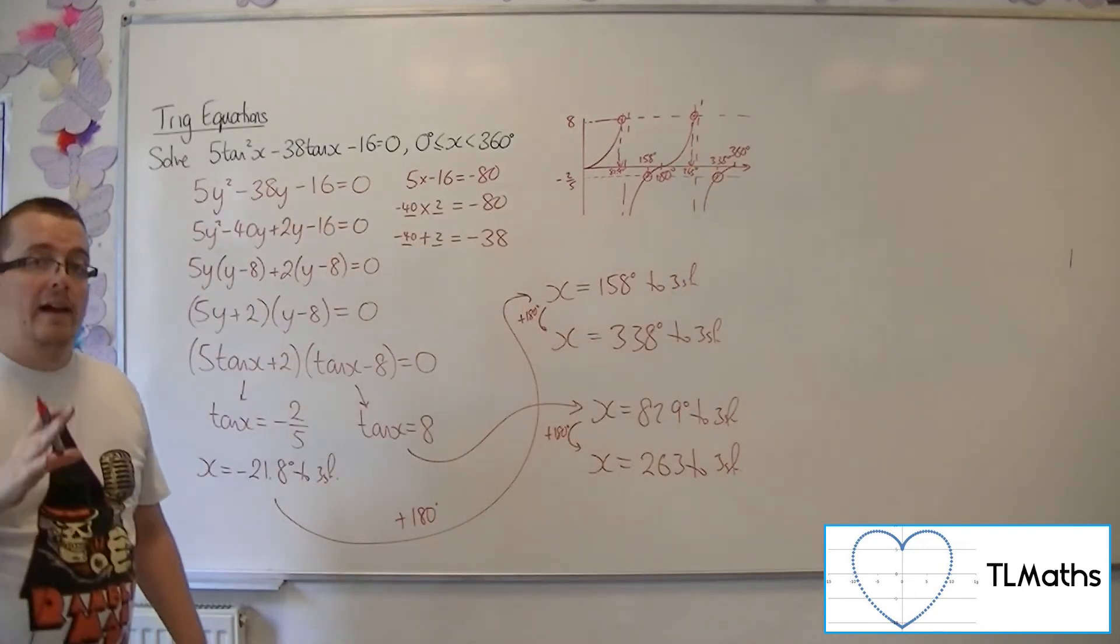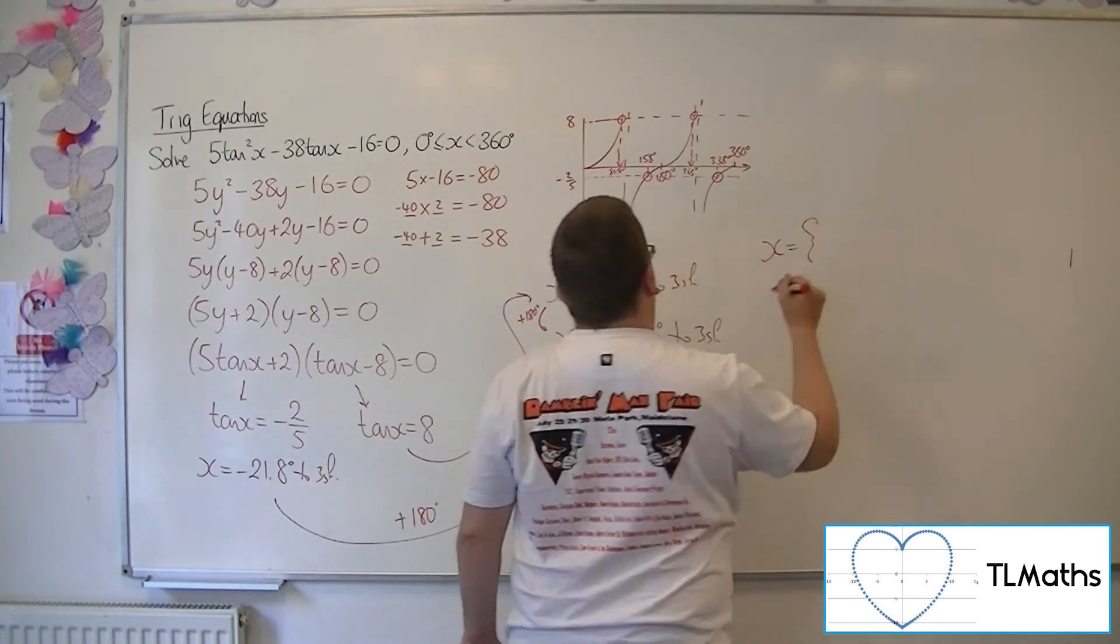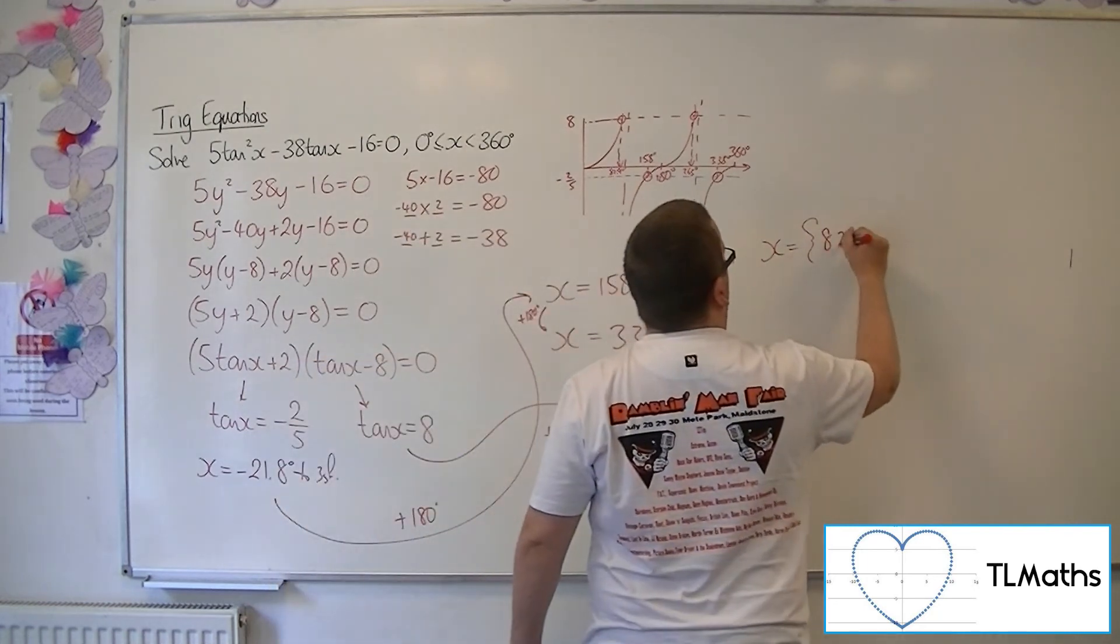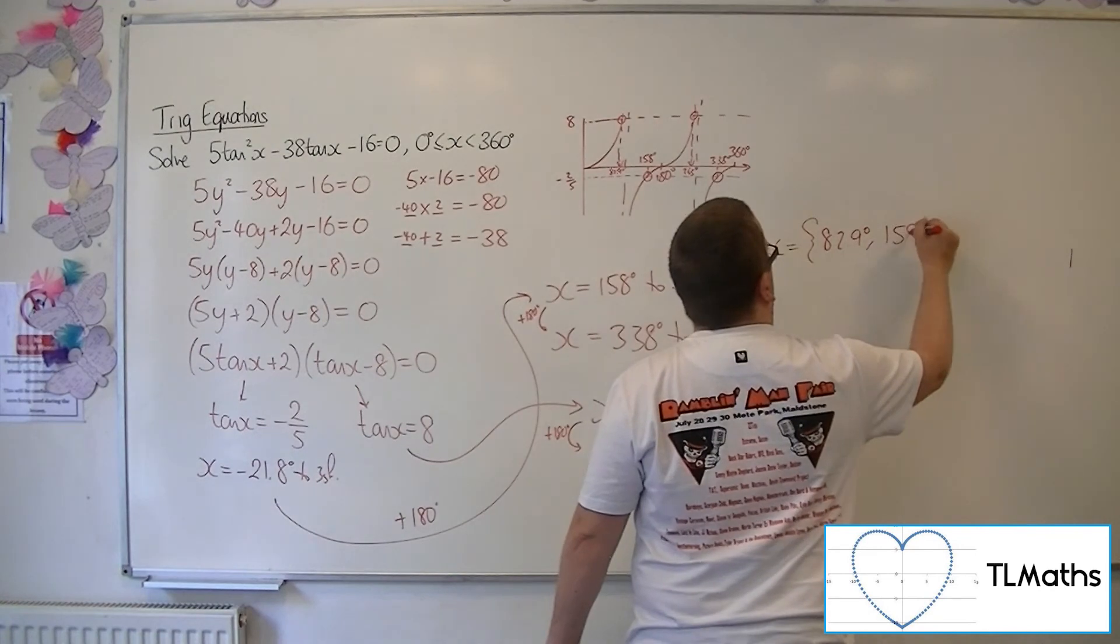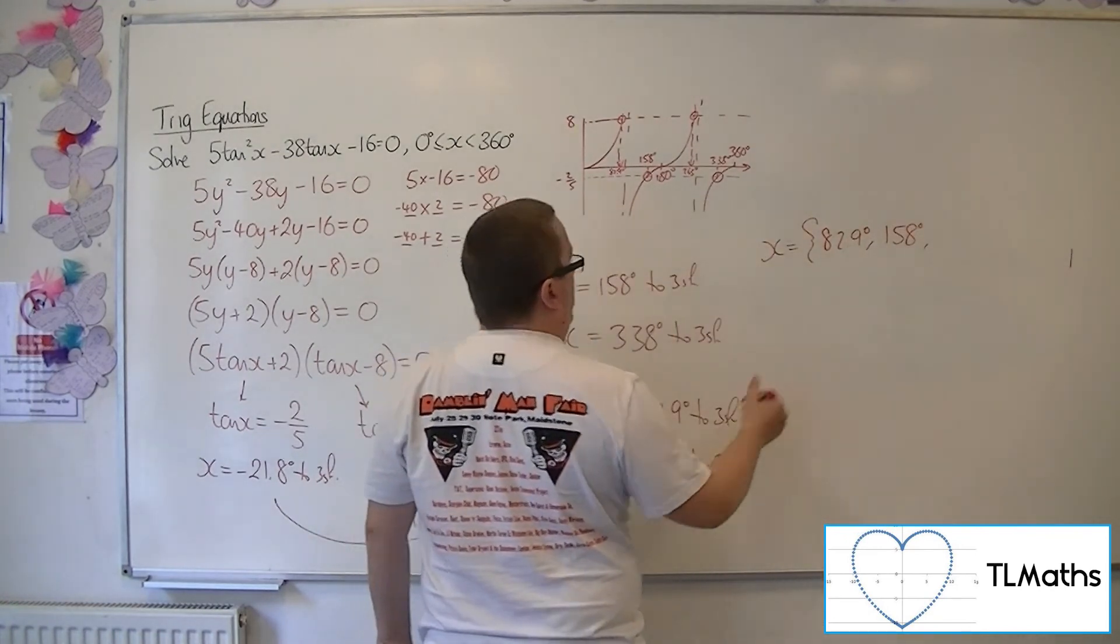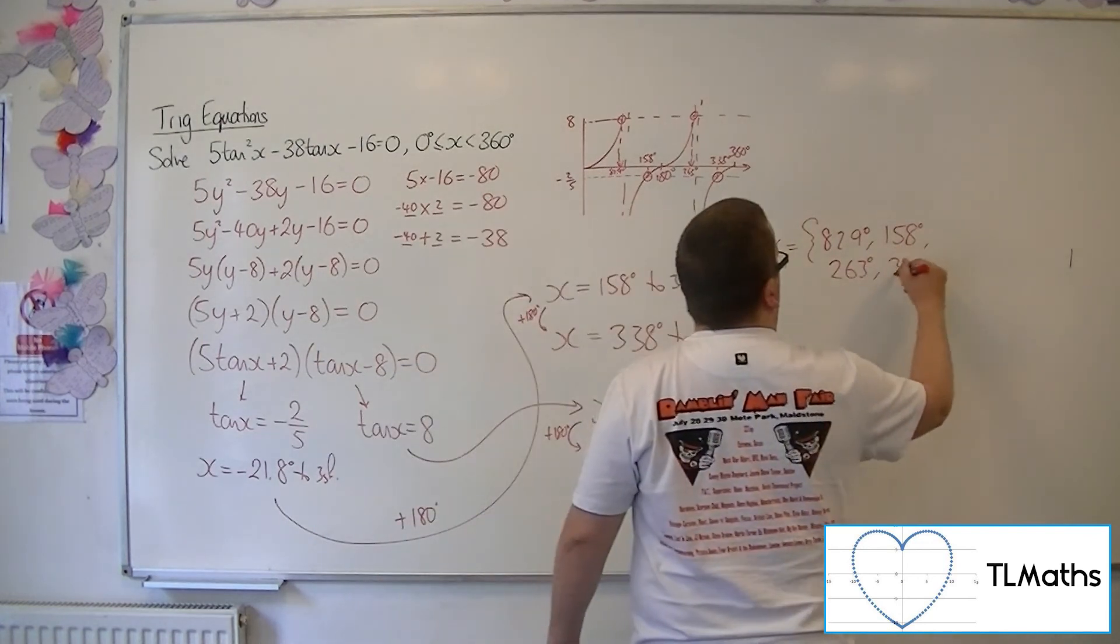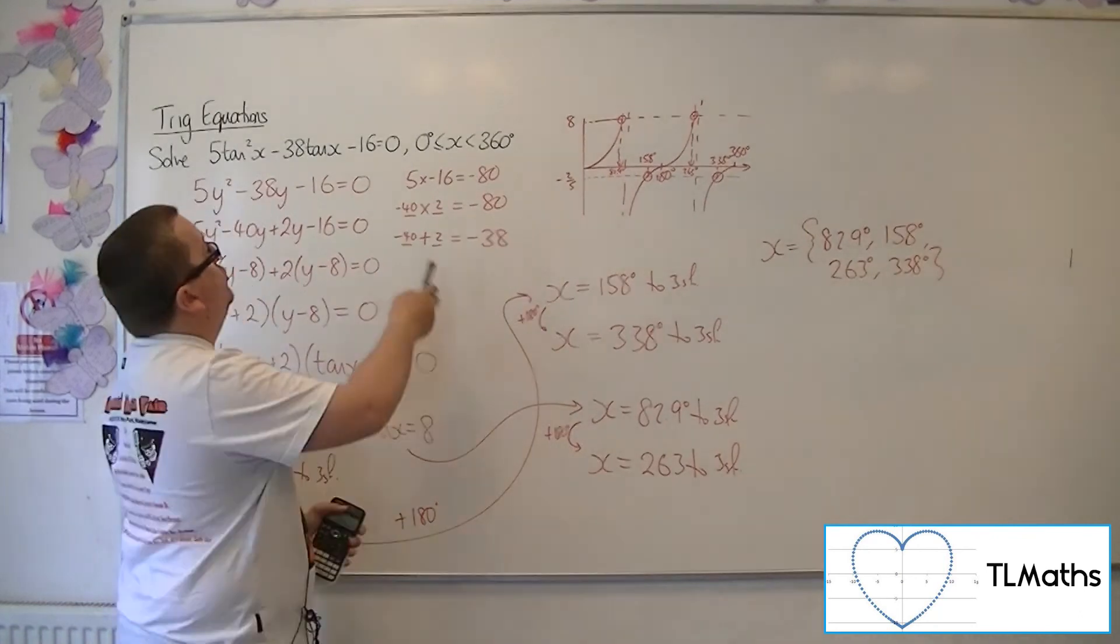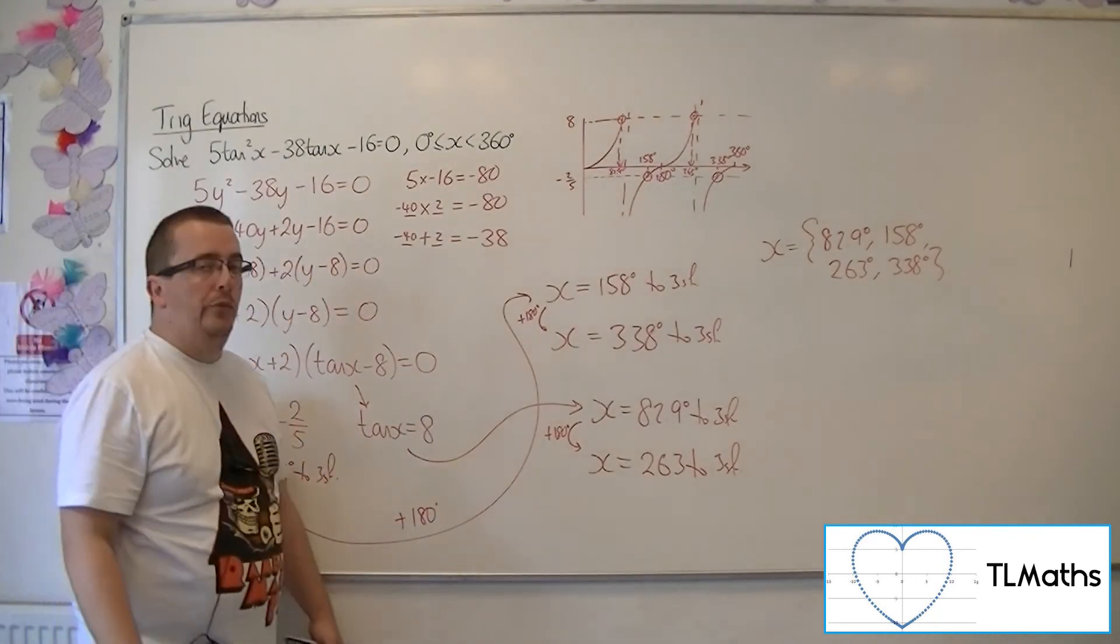And so I have my four solutions. So I've got, in order of size, 82.9, 158, 263, and 338. So there are four solutions to the original problem: 5 tan squared minus 38 tan x minus 16 equals 0 between 0 and 360.